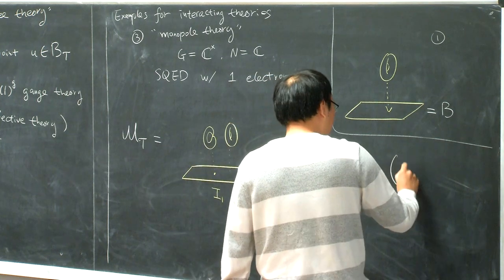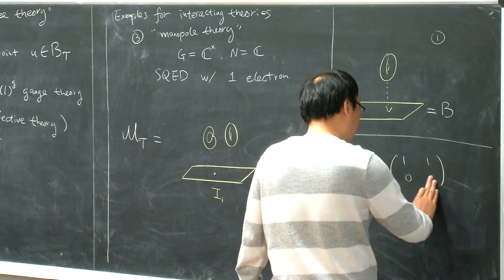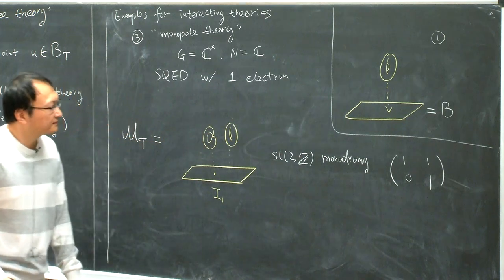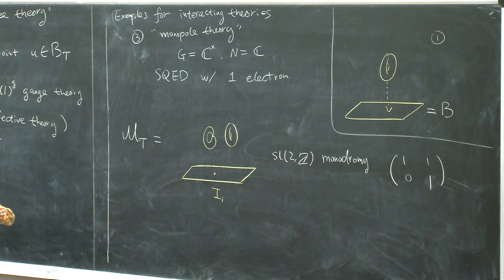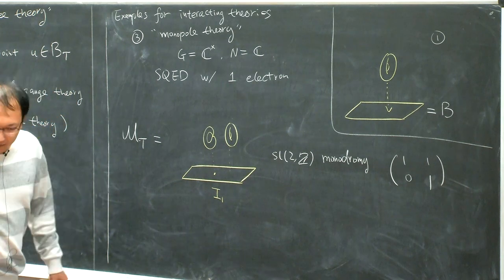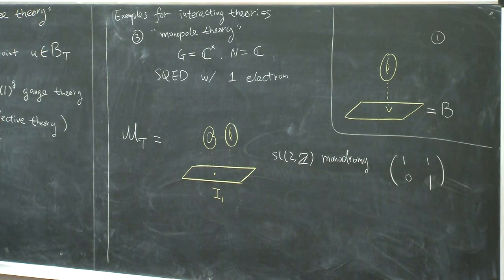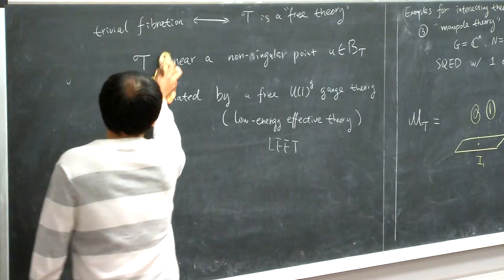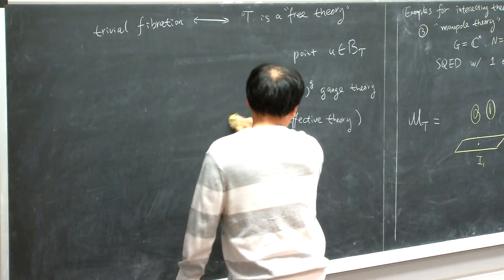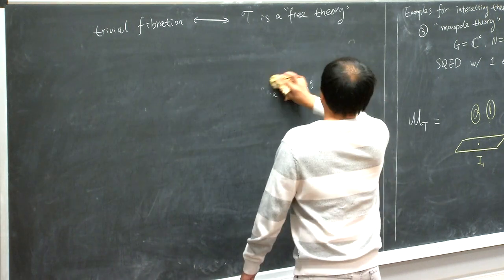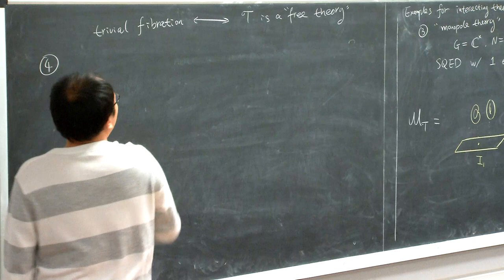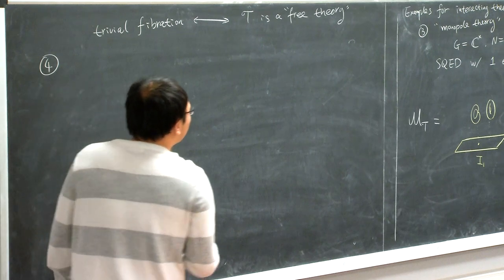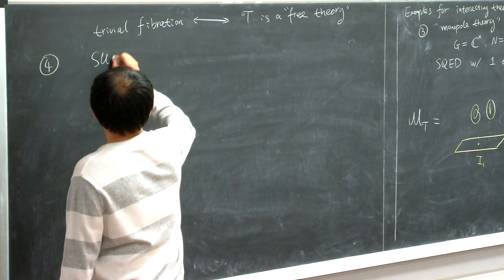If you go around this singularity, you will get an SL(2,Z) monodromy. Example four — this example is again familiar. This is SU(2) gauge theory.